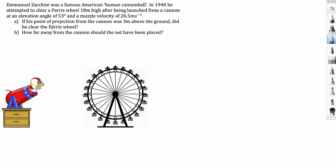His point of projection from the cannon was 3 meters above the ground, which we've demonstrated with this chest of drawers. Does he clear the Ferris wheel? Does he fly nicely over the Ferris wheel and come to a halt back down here?